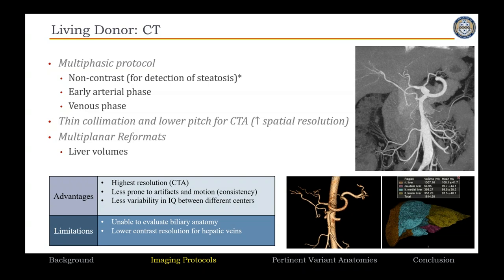The advantages of CT are its highest resolution, especially for CTA, and it is less prone to motion artifacts — providing more consistent imaging, especially at centers with less experience and less variability in image quality between centers. The limitations are its inability to evaluate biliary anatomy, and in some cases the contrast resolution for hepatic veins may not be perfect, because by the time you wait to see contrast in hepatic veins you're in the equilibrium phase and contrast between veins and surrounding tissue may be insufficient.